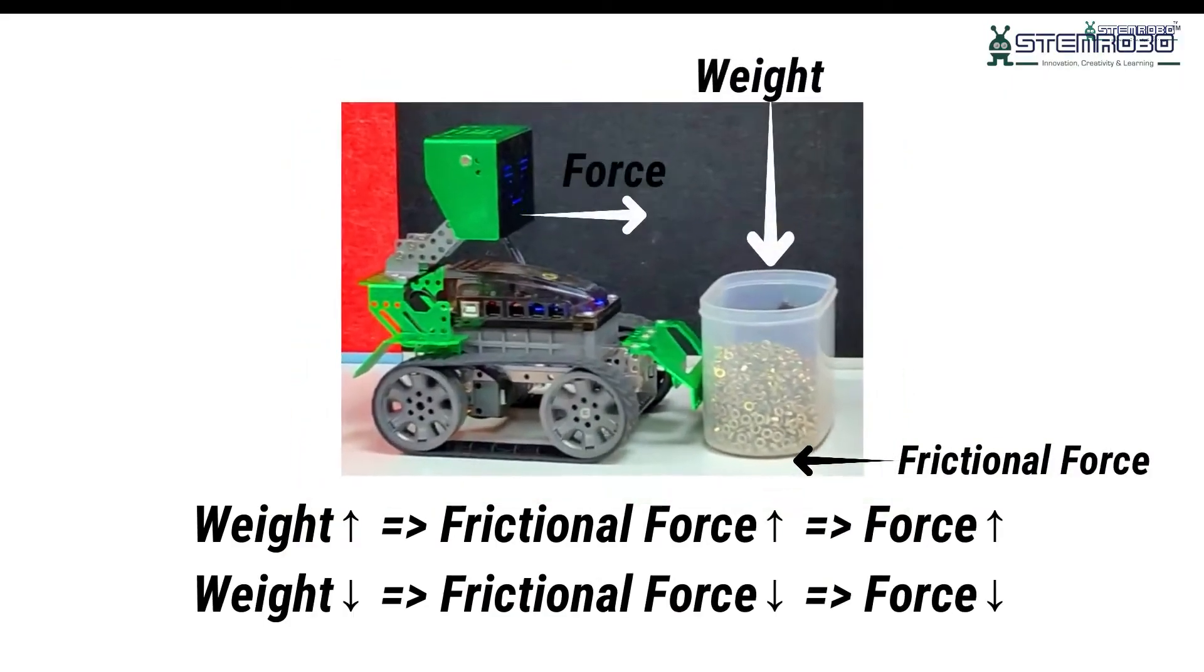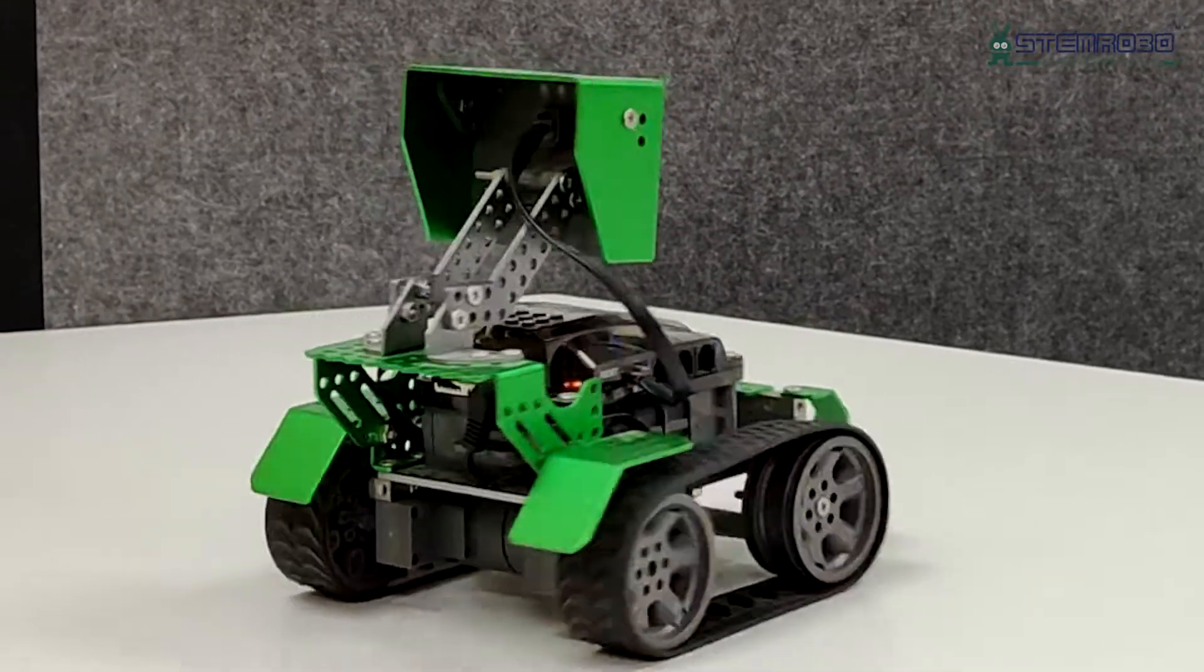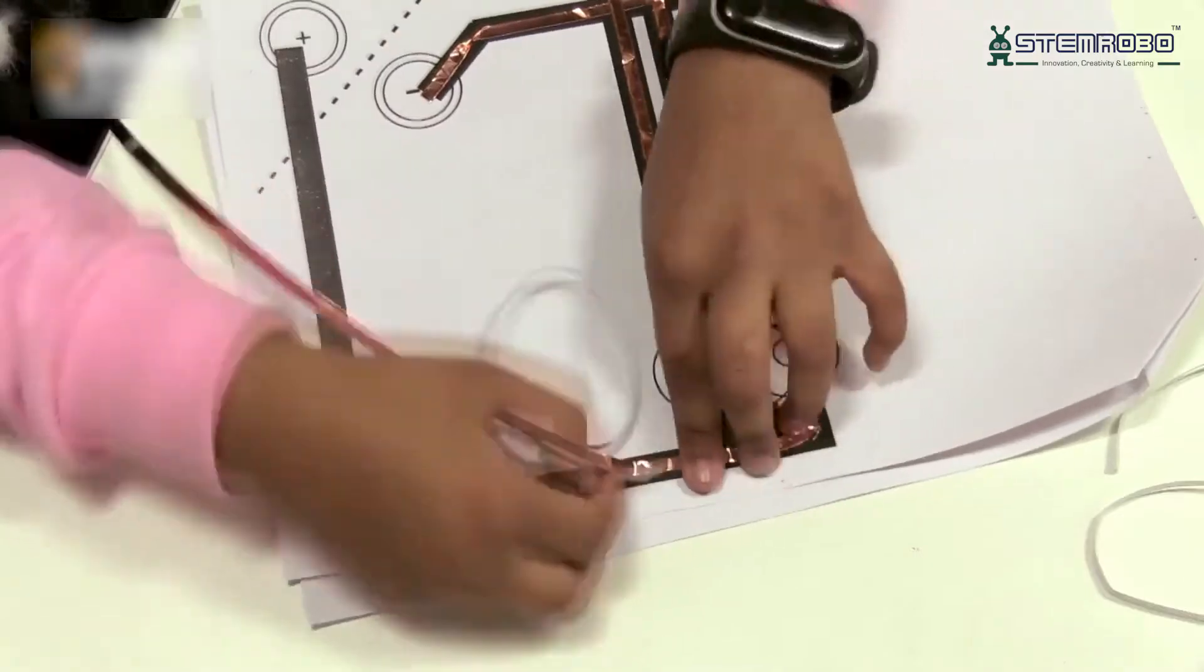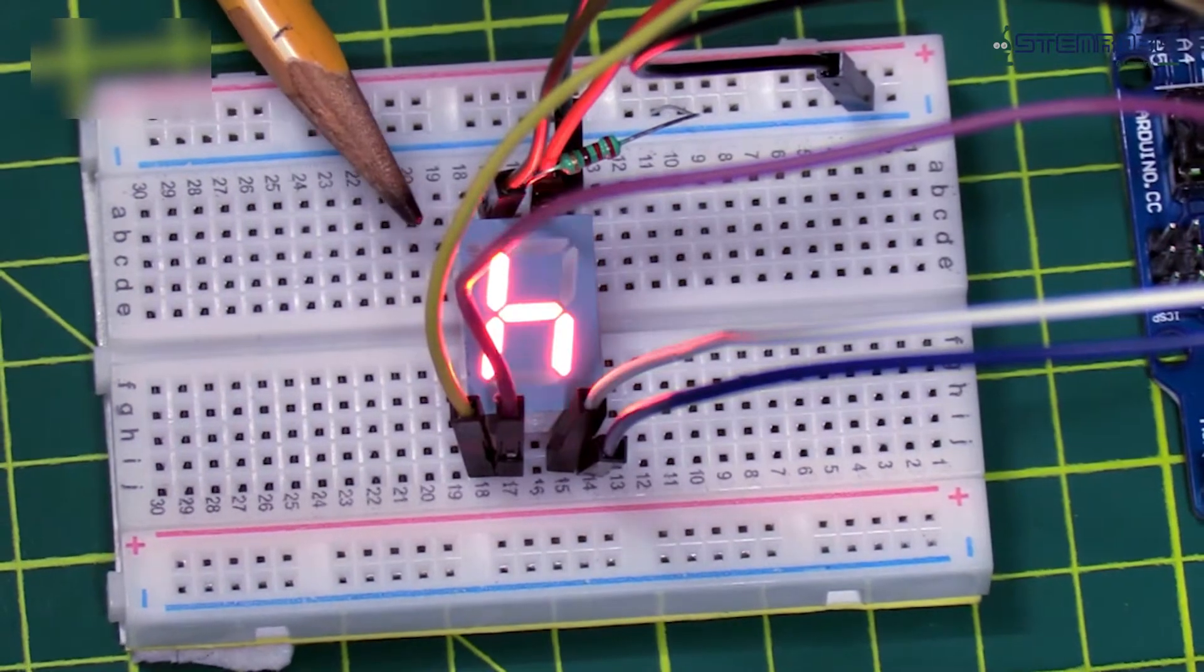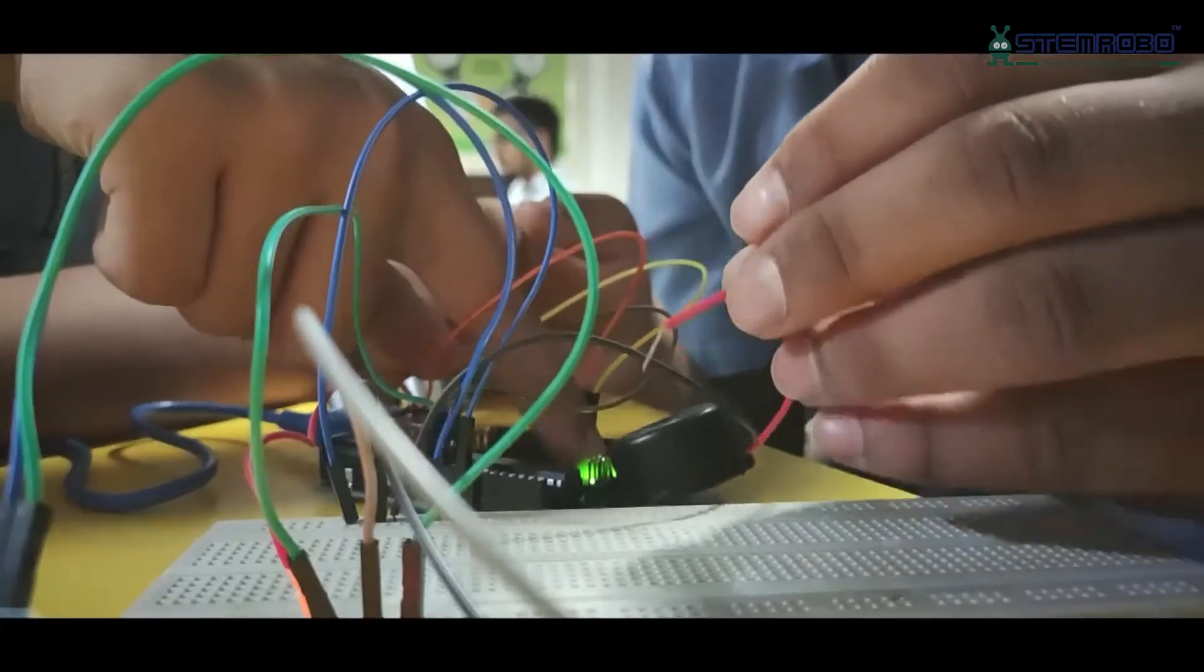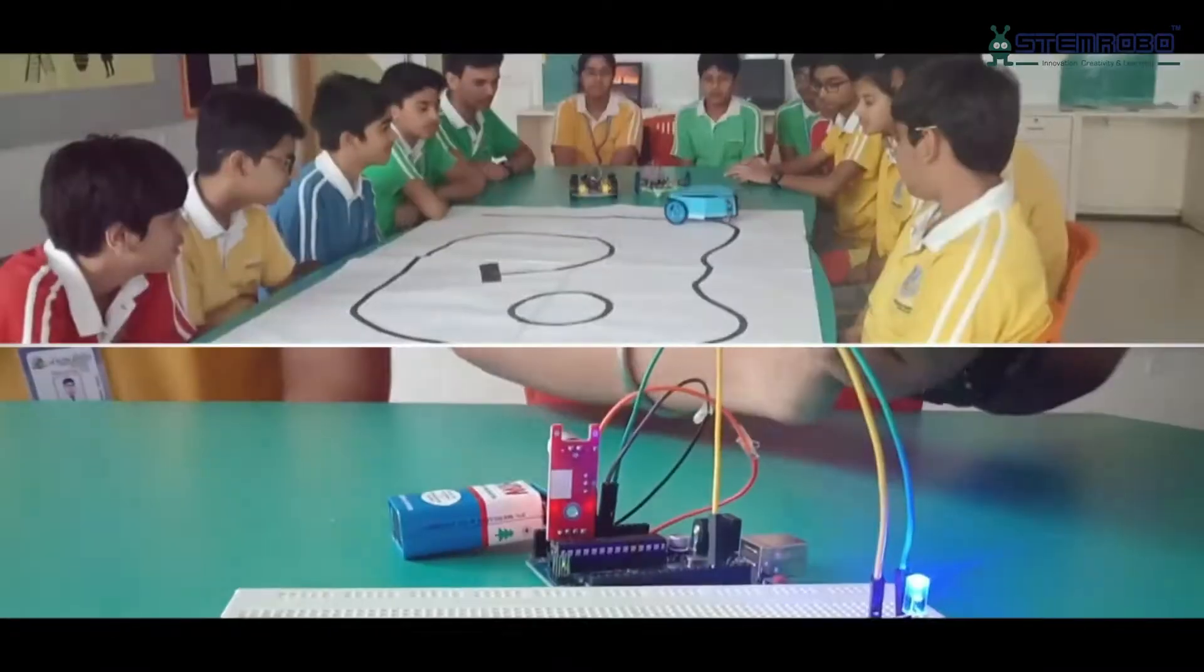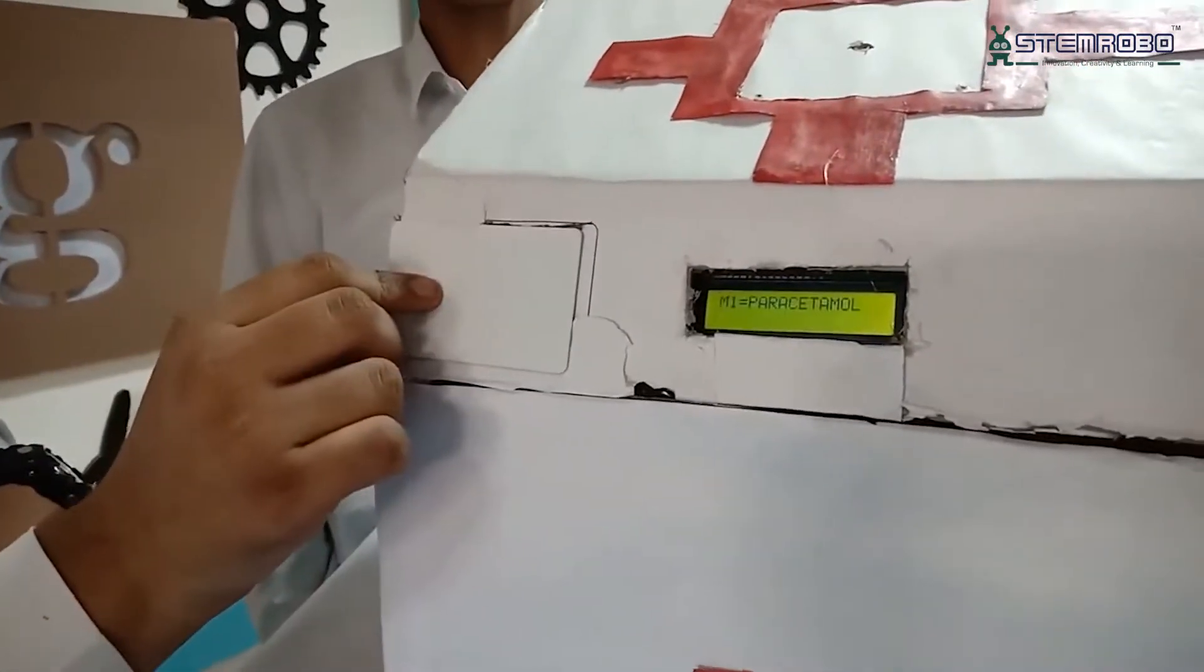At the heart of STEM Robo's mission lies a dedication to enrich young minds through experiential and activity-based learning. These DIY kits are meticulously designed to integrate science, technology, engineering, and mathematics principles to ignite curiosity, creativity, and problem-solving skills for the next generation. Through hands-on engagement, these kits do more than just educate—they transform children into innovators ready to take on the challenges of tomorrow.